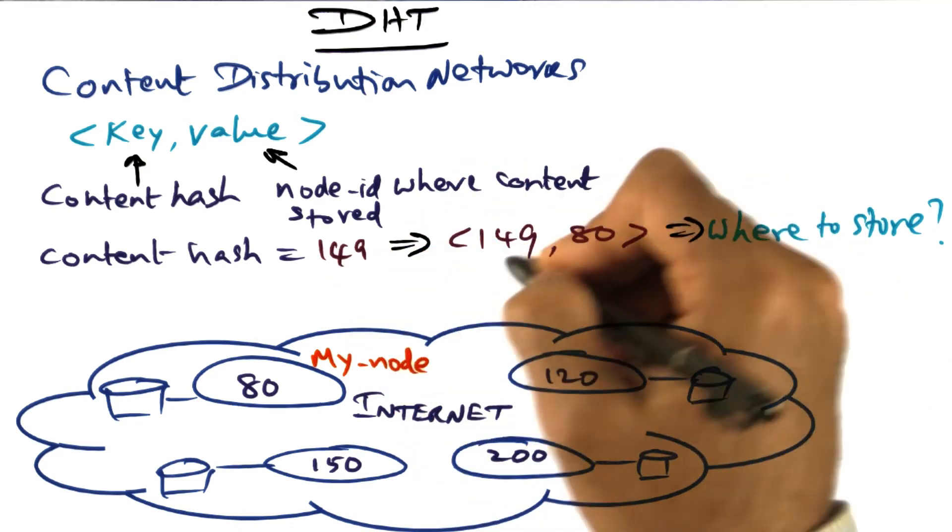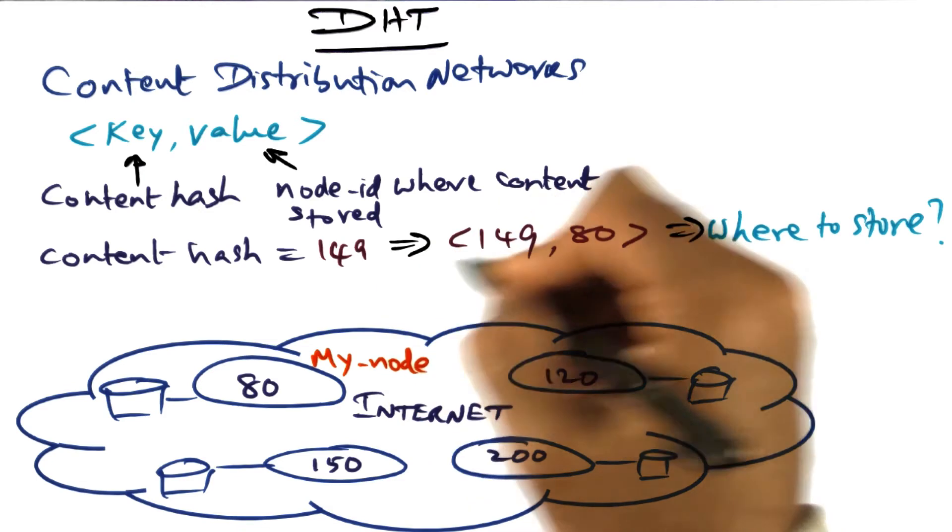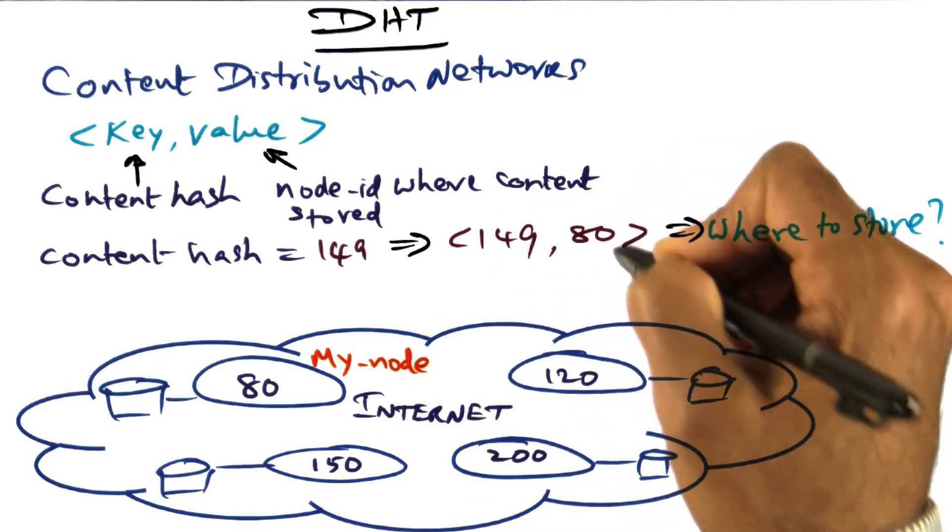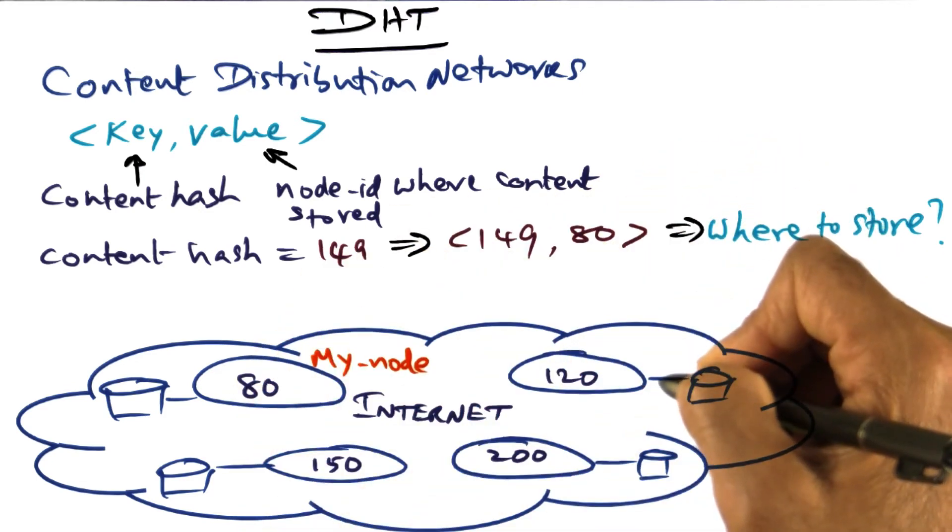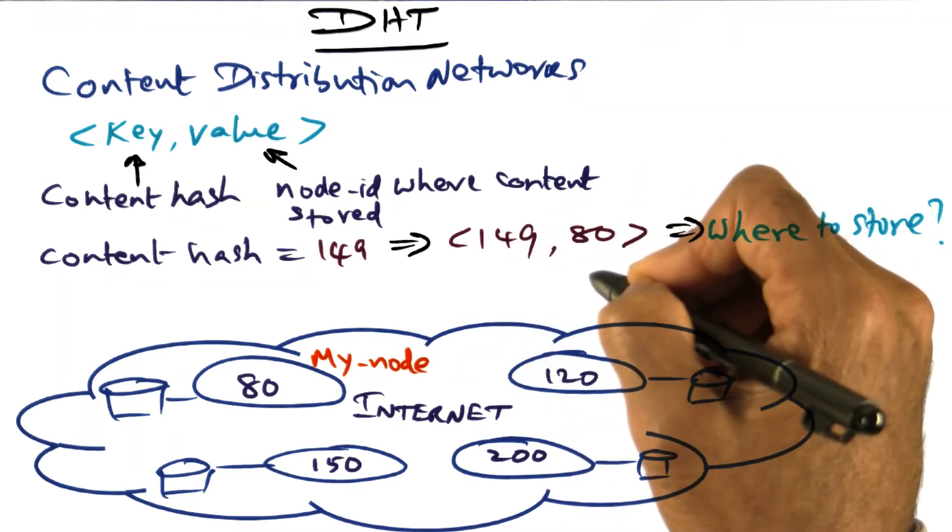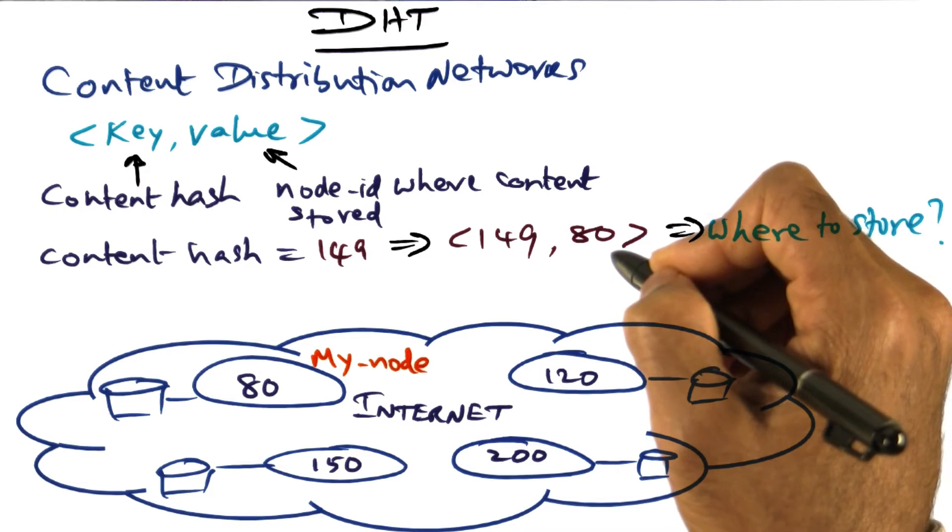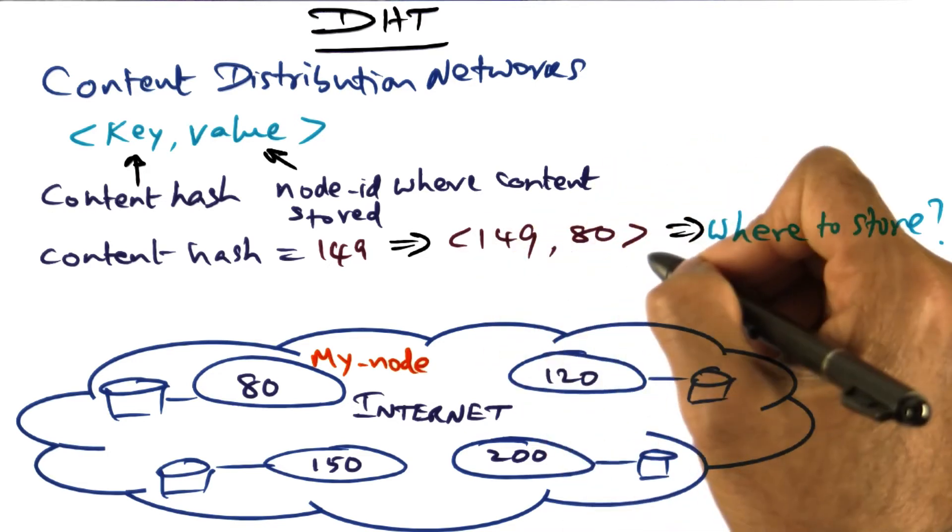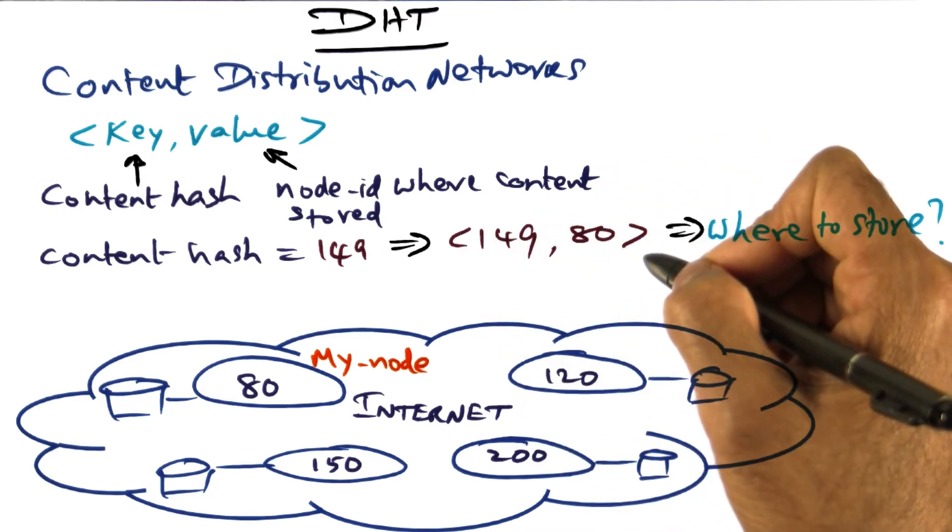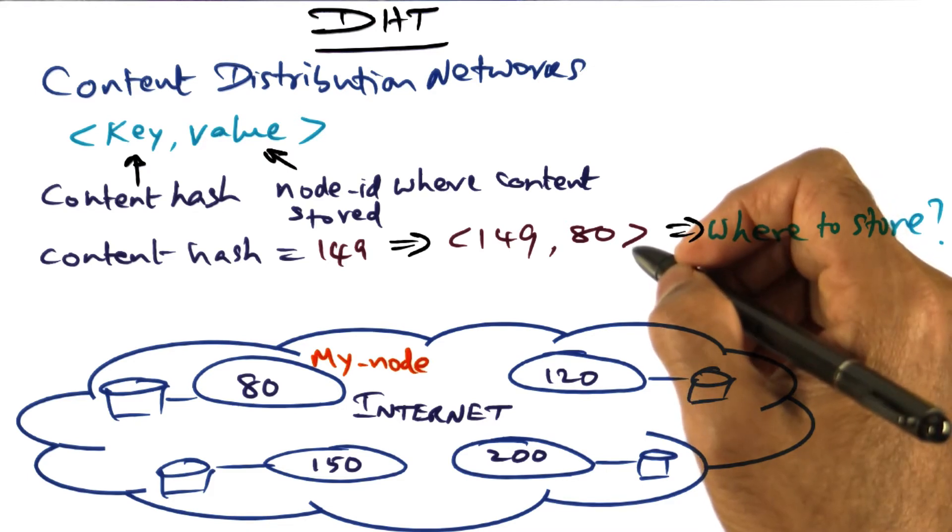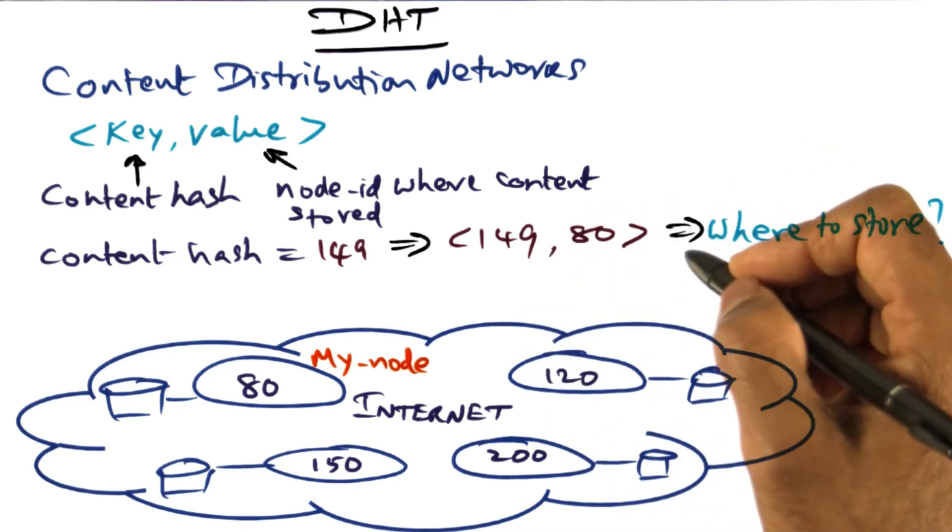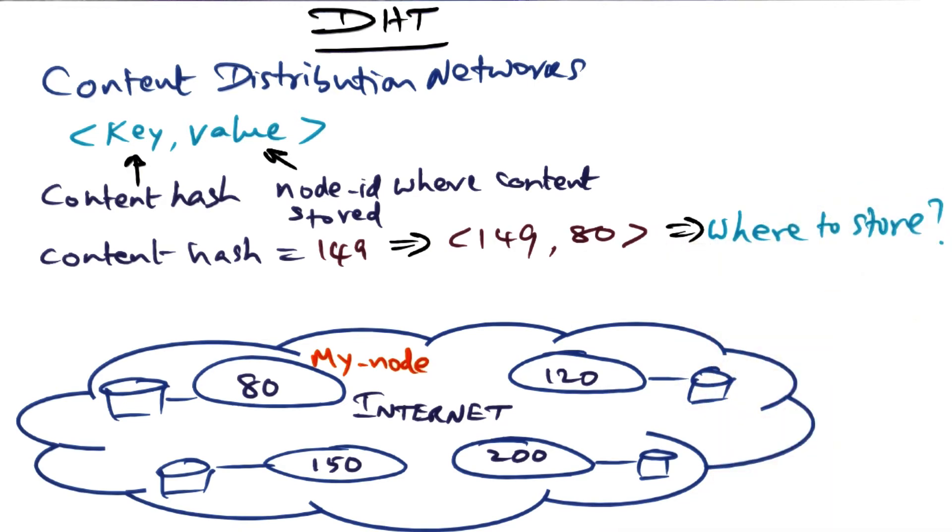So when I created this key value pair, I have to find a way to place it in the internet so that anybody can get this key value pair and from that know the node from which they can download the content. Now we cannot put this on a central name server because it does not scale, because user generated content is proliferating on the internet. So using a central server to store all the key value pairs is just not scalable. We need a distributed solution.